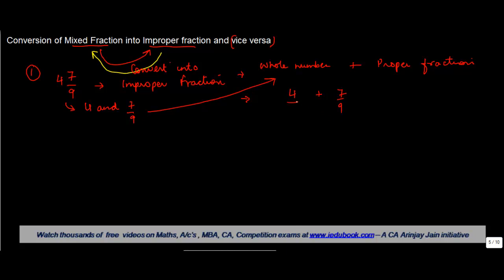Now if you add these two, we can write 4 as 4 by 1 and 7 by 9. The least common multiple of 1 and 9 is 9. So 9 goes into 1 nine times, giving us 9 times 4 plus 7, which is 36 plus 7, divided by 9, equal to 43 by 9.